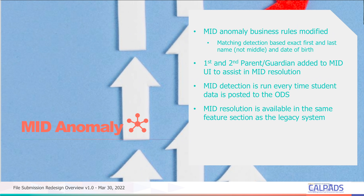The MID anomaly process is also changing. Matching will be based on exact first name, last name, and date of birth. A nice new feature on the UI is that the screen will display parent or guardian information if there is a SIMF record. If it's a brand new SSID with no SIMF record submitted, the parent guardian ID will be blank. MID detection will run every time student data is posted to the ODS.